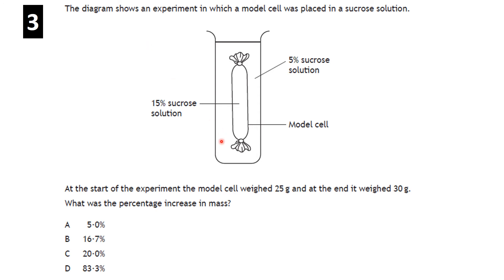Question: a model cell was placed in sucrose solution, starting at 25 g and ending at 30 g — calculate the percentage increase in mass. It's change over original times 100: 5 ÷ 25 × 100 = 20%. The answer is C.